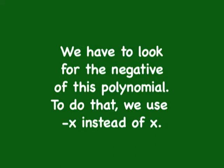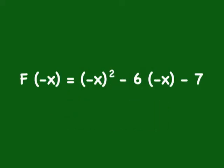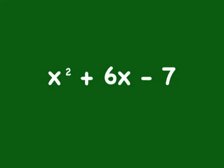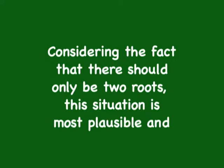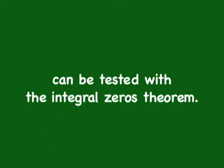To find the negative form, we use negative x instead of x. So it becomes f(-x) = (-x)² - 6(-x) - 7, which simplifies to x² + 6x - 7. This also has just one variation, between positive 6x and negative 7, meaning it has only one negative root. Considering there should be two roots total, this situation is most possible and can be tested with the integral zeros theorem.